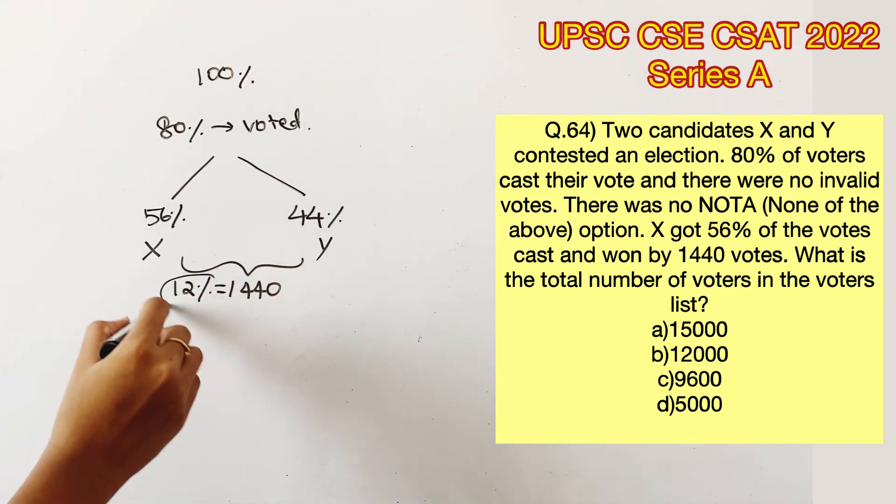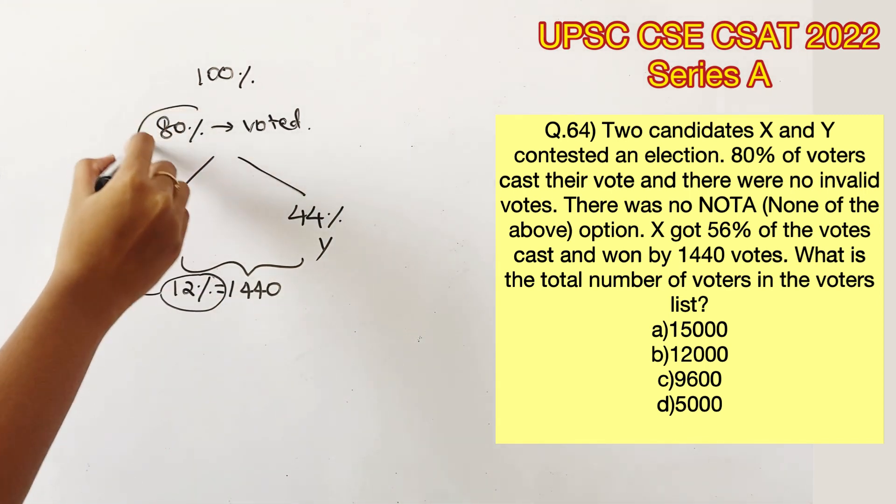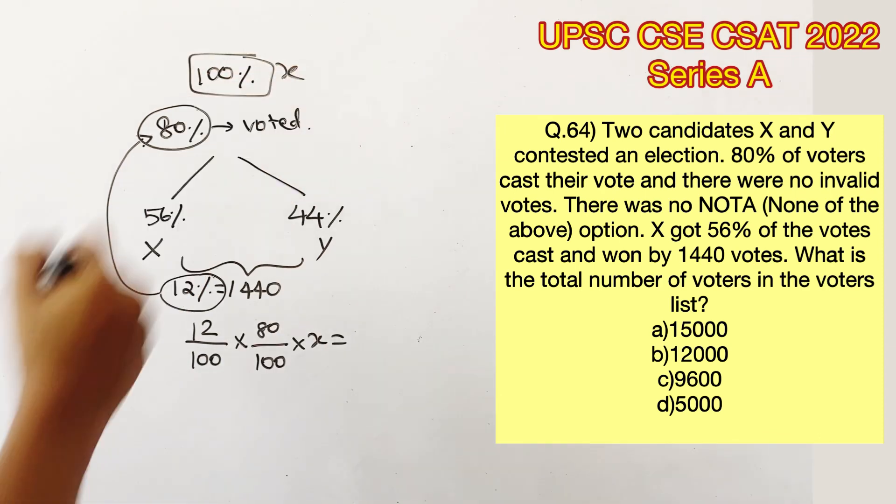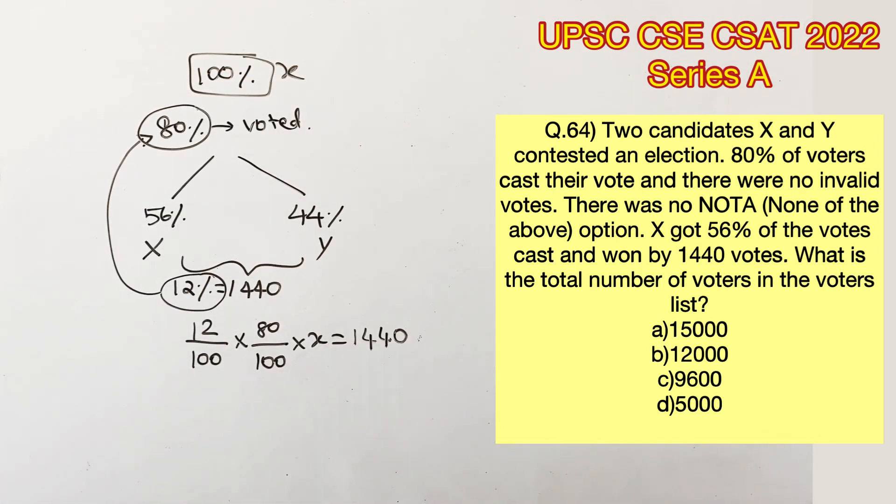Now we know that 12% of 80% of the total voters list is equal to 1440. Let's write that in equation: 12 by 100 of 80 by 100. Let's take the total votes as X is equal to 1440.